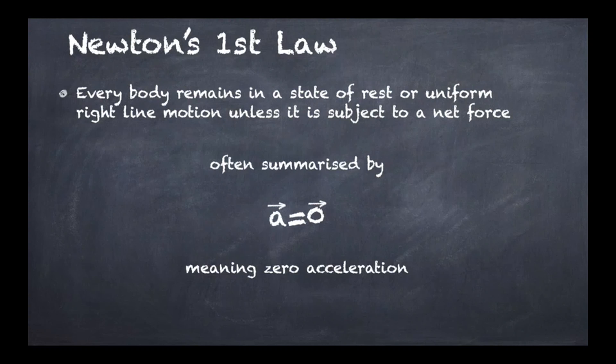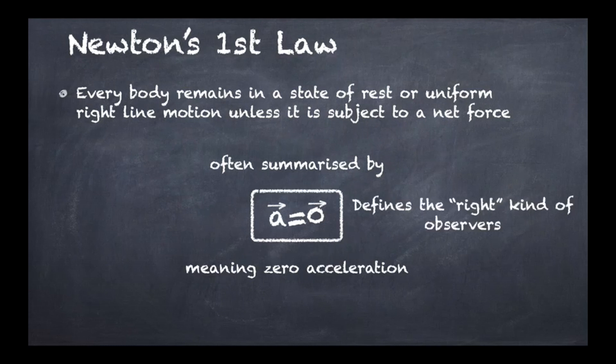So let's have a look at the first law that we discussed earlier. What we did is summarized it with the equation a equals zero but in doing so we actually omitted something. a is equal to zero but for whom? As we've seen, Alice and Bob, if they are in relative motion with respect to each other, they are going to witness different accelerations and therefore the statement a equals zero has to refer to a specific kind of observer. The meaning of a equals zero here is that this is basically a defining feature of the right kind of observers. The right kind are observers who are going to observe a state of rest or uniform right line motion unless the object is subject to a net force.